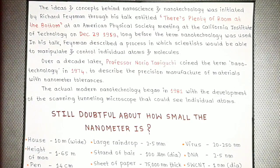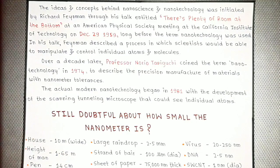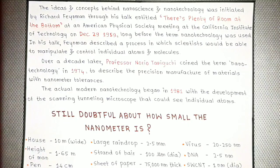If you are still not clear about how small a nanometer is, let's compare different things with their sizes for better understanding. Consider the house you live in — it is about 10 meters wide. Height of a man is 1.65 meters. A pen is 14 centimeters. A large raindrop is 2.5 millimeters. A strand of hair is 100 micrometers in diameter. A sheet of paper is 75,000 nanometers thick. Any virus is just 20 to 250 nanometers. The DNA in our body is just 2.5 nanometers, while a SWCNT — a type of nanotube — is just 1 nanometer in diameter.